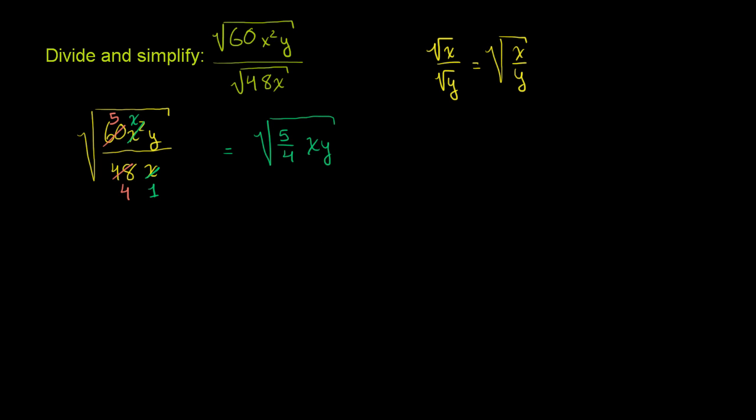And now, we could leave it just like that, but we might want to take more things out of the radical sign. And so one possibility that you can do is you could say that this is really the same thing as, this is equal to 1/4 times 5xy, all of that under the radical sign. And this is the same thing as the principal root of 1/4 times the principal root of 5xy.